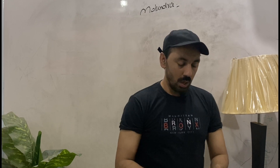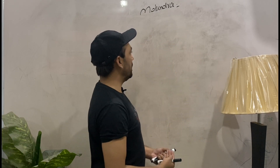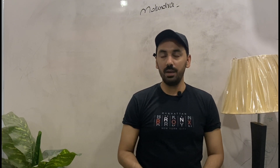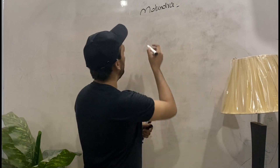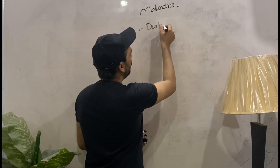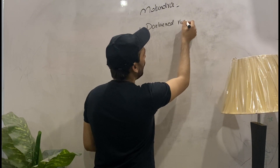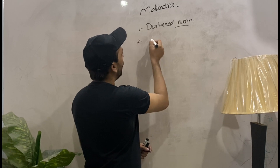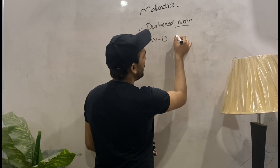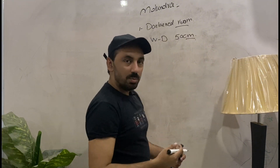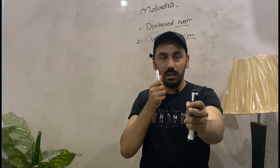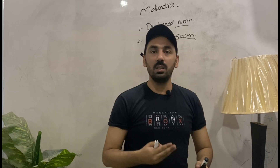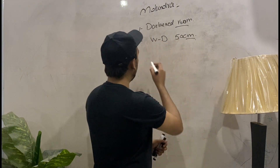Now we will discuss the prerequisites or requirements of this type of retinoscopy. First, your room should be totally darkened — not dim light, but totally dark. The working distance must be 50 centimeters. The next important thing is the target — what the patient will fixate on.